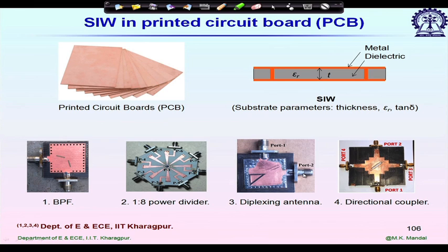A fourth example is a directional coupler. If you feed at port 1, it divides the power between port 2 and port 3 with a 90-degree phase difference.